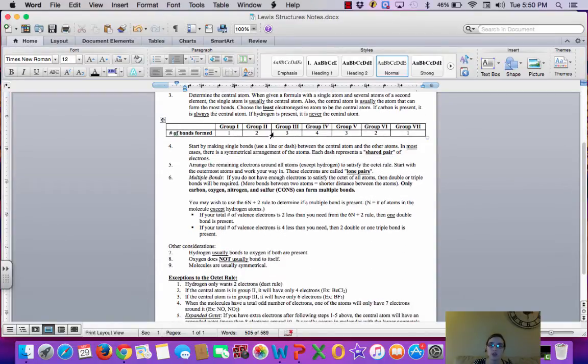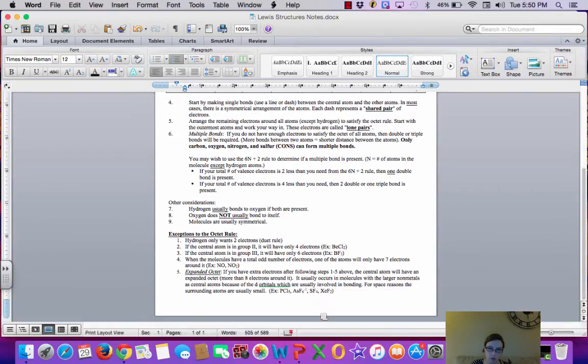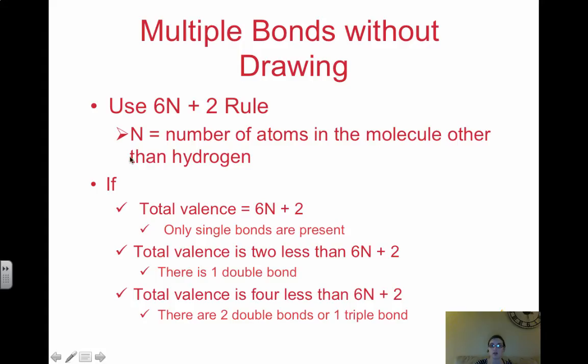And then you also have the Lewis structures handout. This also summarizes, it's just typed instead. But notice here in this table, you have the number of bonds formed in each group of elements. And then at the very bottom, you have some exceptions to the octet rule. Group 3 with boron only needs 6 electrons. You can also have what's called an expanded octet. And we'll focus more on expanded octet when we look at shapes. But if you have extra electrons, the central atom will have the expanded octet. So if you ever have extra electrons after you've placed all of the valence electrons to fill the octet of the outer atoms, you're going to place any extra electrons on the central. This is okay because typically this is due to larger molecules that have the d orbitals. So it can actually hold an expanded octet. But remember that the expanded octet only happens on the central atom.